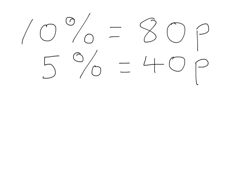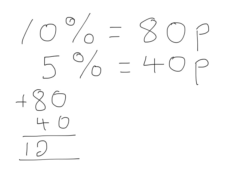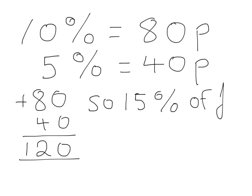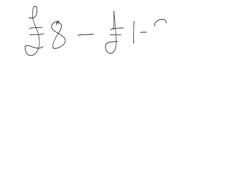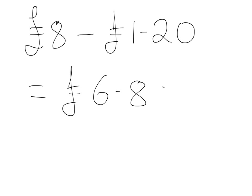Adding these two amounts together, the 80 and the 40, will give us 120 pence. So this gives us 15% of 8 pounds equals 1 pound and 20 pence. So if the discount was 15%, the calculation would be 8 pounds take away the 1 pound 20 that we just worked out was 15% of the 8 pounds, leaving a price of 6 pounds 80.